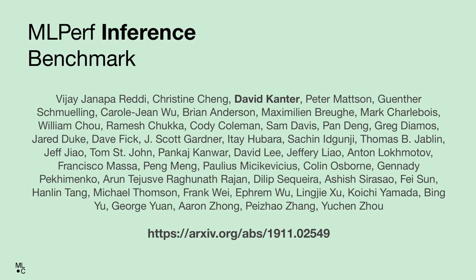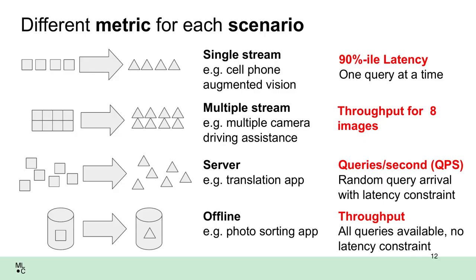In past briefings I've given a long overview of MLperf inference; I'm going with a much shorter one. As a reminder, in MLperf inference we have four different scenarios representing different deployment contexts: single stream, where you only care about latency for answering one query; server, which represents online random query arrivals measured as throughput with a latency constraint; offline, which has no latency constraint; and multi-stream, which is throughput for eight images at a time sent in a synchronized fashion.